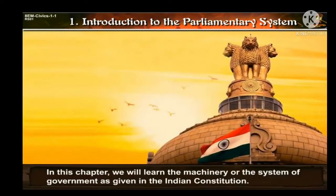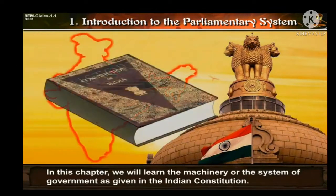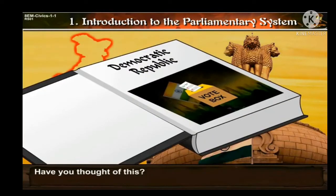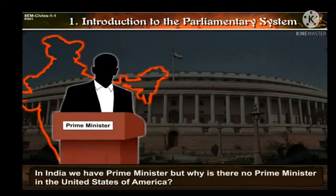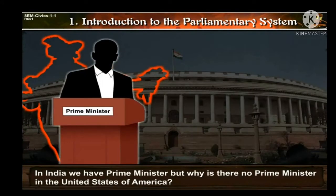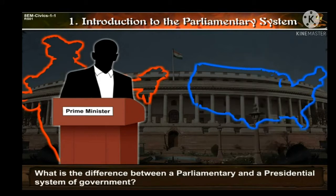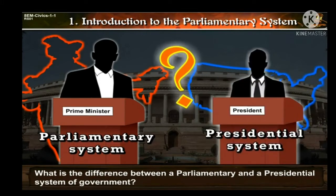In this chapter, we will learn the machinery of the system of government as given in the Indian Constitution. Have you ever thought about this: what is the Parliamentary System of Government? In India, we have a Prime Minister. But why is there no Prime Minister in the United States of America? What is the difference between a parliamentary and a presidential system of government?